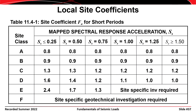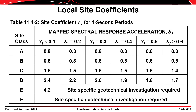After determining the site classification and mapped spectral accelerations, you use Table 11.4-1 to find F sub A — enter with site classification on the vertical axis and short-period acceleration on the horizontal axis. In rare situations a site-specific geotechnical investigation is required, which can be time-consuming and costly. Table 11.4-2 similarly gives the site coefficient for the one-second period, F sub V.